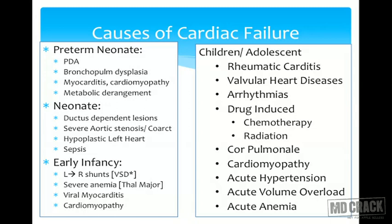In early infancy we have typical left-to-right shunts presenting as pulmonary resistance falls. Severe anemia — for example thalassemia — and various causes of myocarditis and cardiomyopathy play an important role during infancy and early childhood. In childhood and adolescence we have acquired causes such as rheumatic valvular heart disease, infective endocarditis, autoimmune causes, and iatrogenic causes such as drug-induced or radiation-induced myocarditis.